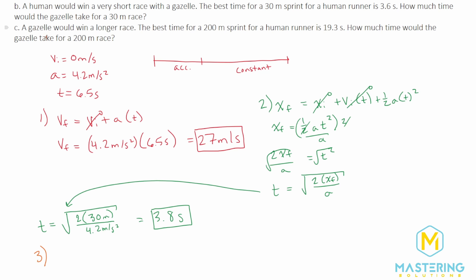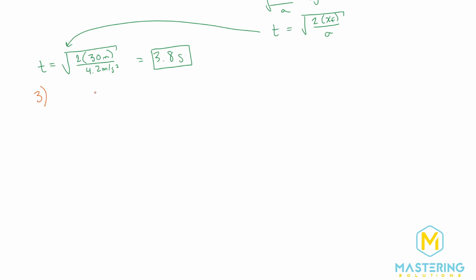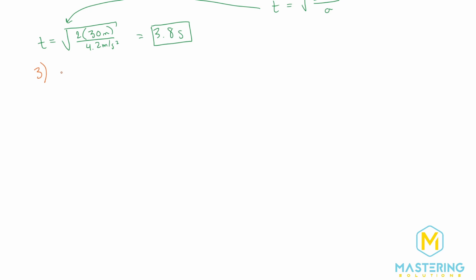Now for this last part they tell us that a gazelle would win in a longer race. For a 200 meter dash a human runner's best time is 19.3 seconds and how long would it take the gazelle to do that race. If you remember though in the problem they told us that the gazelle has two sections one where it's accelerating and one where it's going at a constant speed. So we'll be using the same equation that we used before the x final equals x initial plus initial velocity times time plus one half the acceleration times the time squared. The x initial we said is zero and the initial velocity is zero. So x final equals one half the acceleration times the time squared.